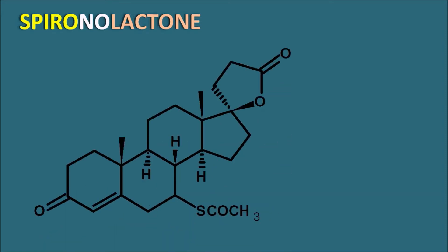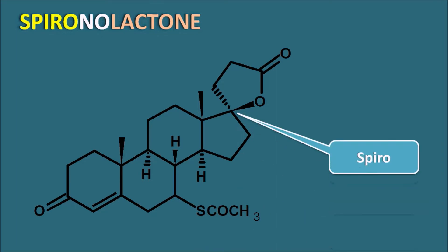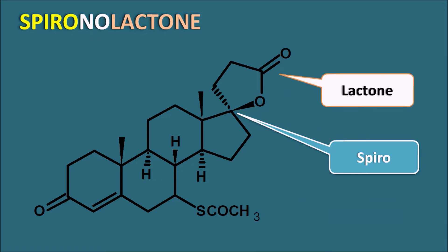What is spironolactone? In the name we can observe the prefix 'spiro' and the suffix 'lactone.' The structure of spironolactone shows a spiro linkage — a compound where two ring systems are fused with a common carbon, without any carbon in between. It also contains a five-membered lactone ring system, which is a cyclic ester.